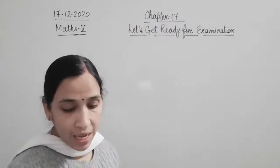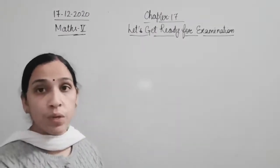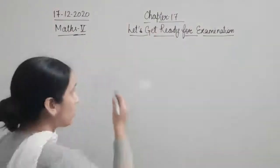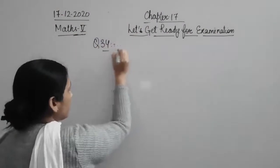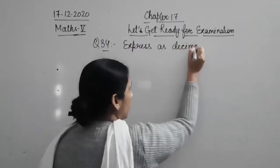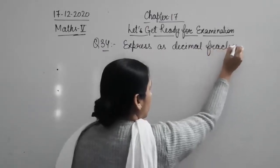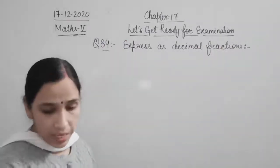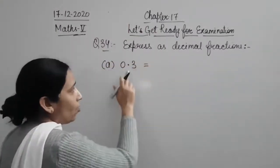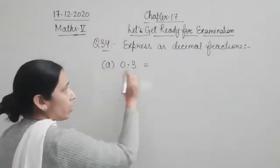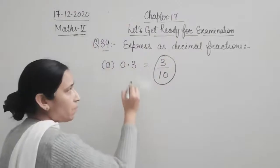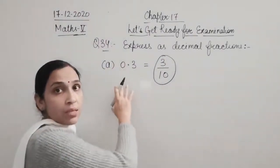Question number 34: Express as decimal fractions. In this, you have been given 0.9. Now, how many decimal places does this number have? One. So we are going to remove this decimal point and divide by 10. This gives the decimal represented in the form of a fraction. To represent a decimal as a fraction, you look at how many decimal places it has.